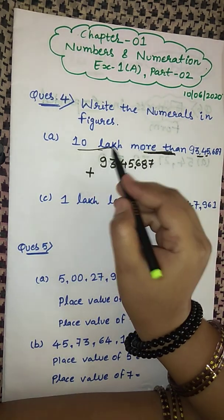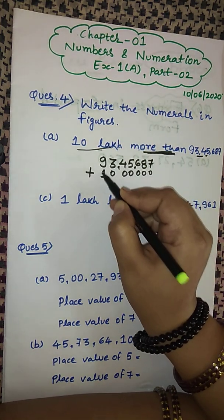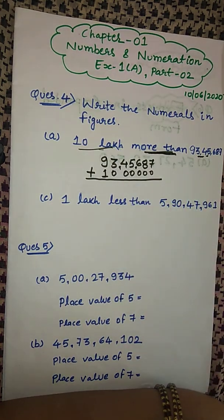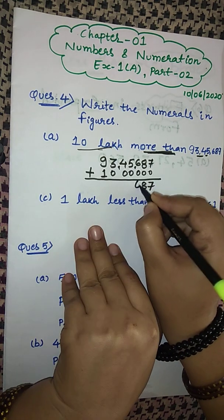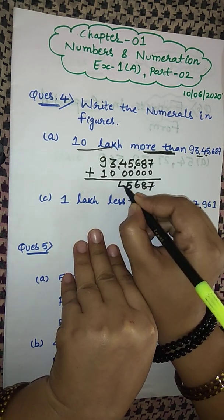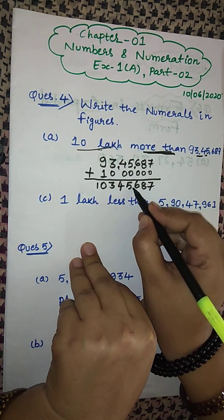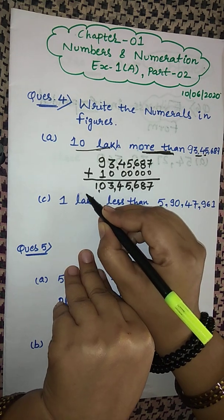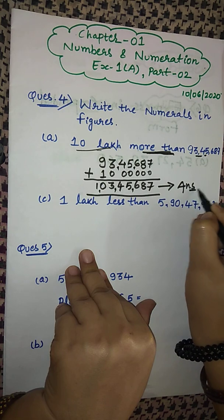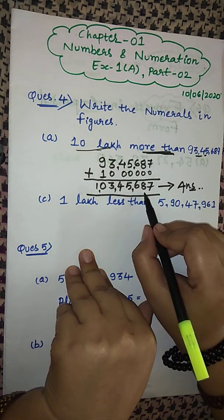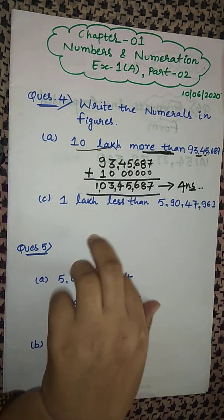We have to add 10 lakhs. The place value columns are: ones, tens, hundreds, thousands, ten thousands, lakhs, ten lakhs, and crores. After adding 10 lakhs to 93,45,687, this is your answer — the numeral in figures for the number which is 10 lakhs more than 93,45,687.